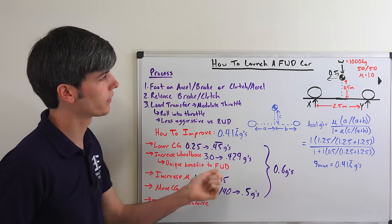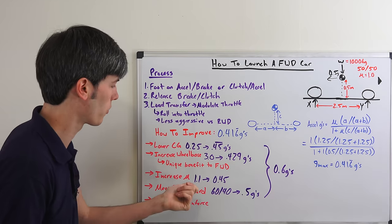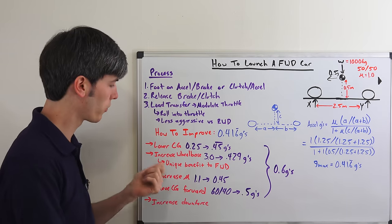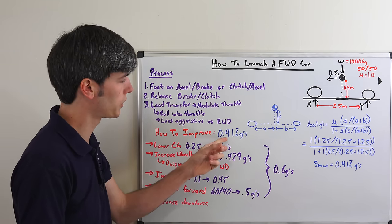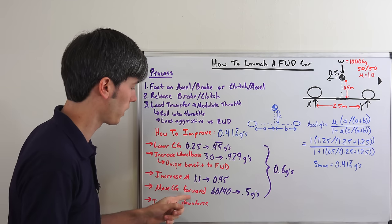Okay, now let's say we swap out our 1.0 frictional coefficient tires for tires with a coefficient of friction of 1.1. So we found some stickier tires. We've increased the maximum acceleration from 0.416 to 0.45.